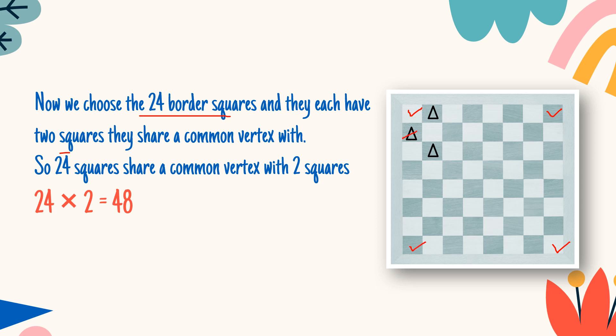This is 1, 2, 3, 4, 5, and 6. So 6 on each side: 6 here, 6 there, 6 here, and 6 here. So this comes out to be 6 multiplied by 4, that's 24 border squares.